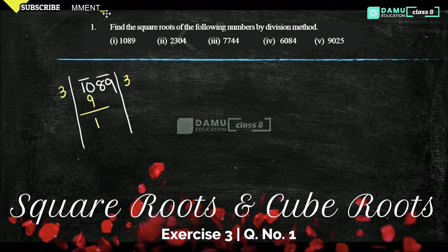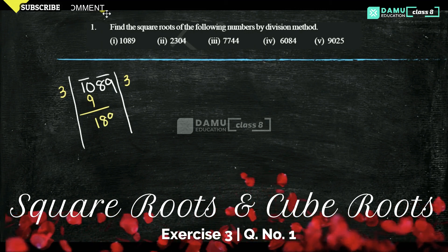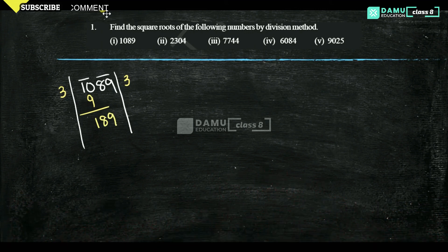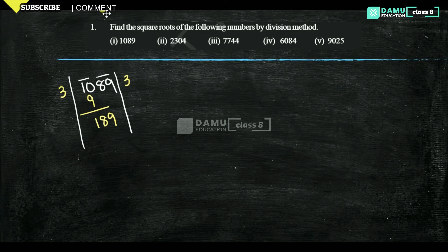89, take it as 189. Our next step is whatever portion is there here, for that we have to take double. So 3 into 2 is 6, then two places will be there. If you take 61, here whatever number you take here, same number only we will get.